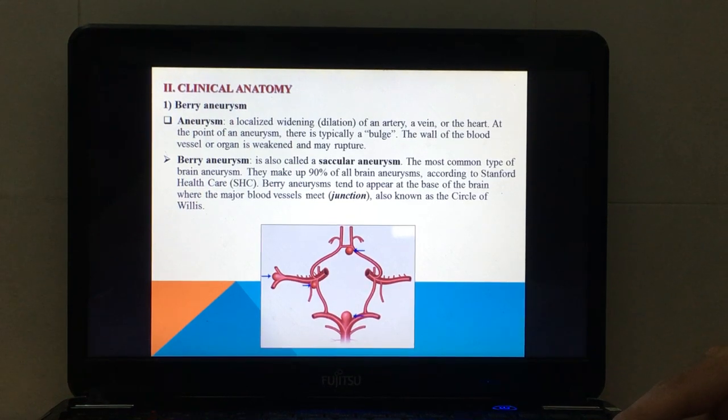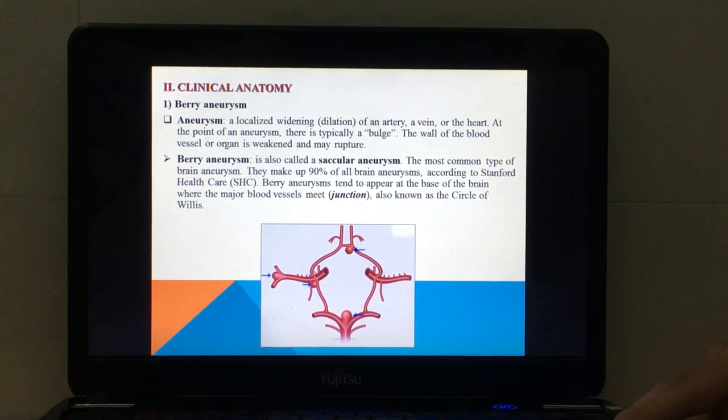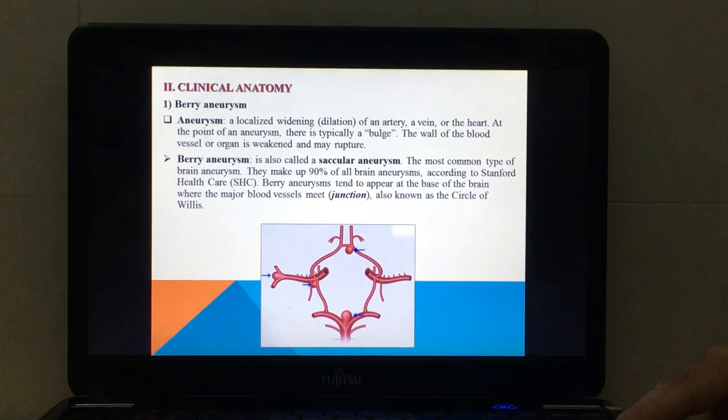So we get to the main part, the clinical anatomy. Today we learn about a berry aneurysm. What is an aneurysm in general? An aneurysm is a localized widening or dilation of an artery, a vein, or the heart.